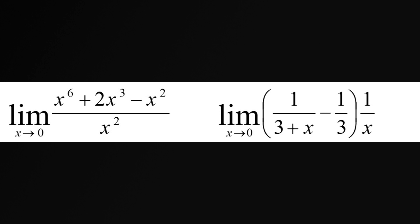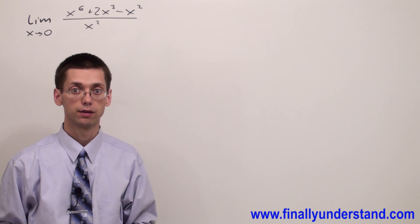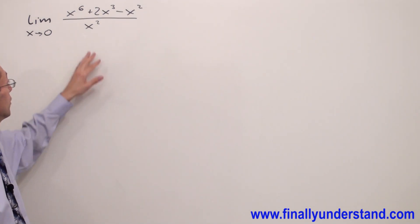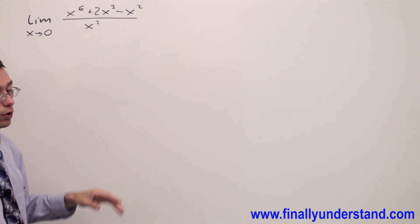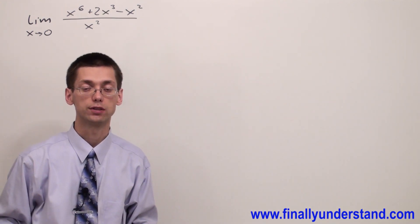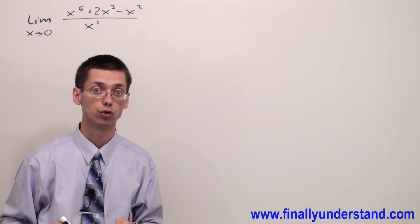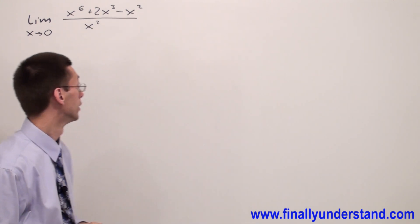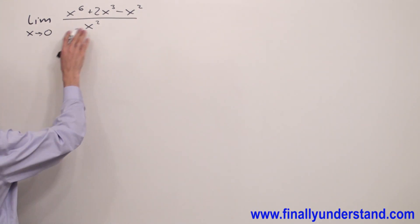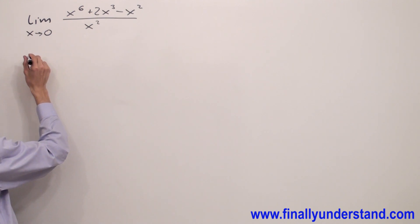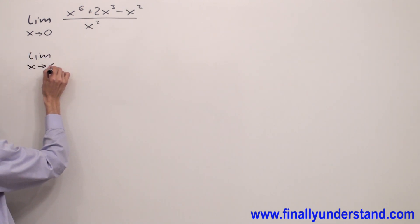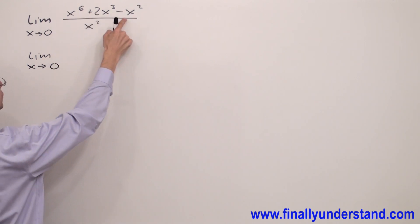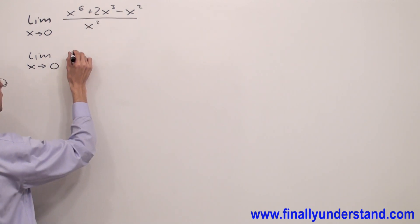Let's take a look at this example again. We have a rational function; in the denominator we have x squared. If you replace x by zero, zero squared gives you zero. We do not want zero in the denominator, so what we are going to do first is check the numerator — maybe we can factorize something. We have the limit as x goes to zero, and I can factorize x squared from the numerator.